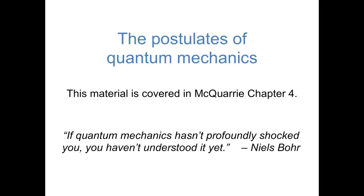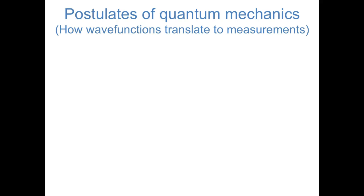Hi everybody. In this video we will continue to talk about how quantum mechanics works. In the previous video, we introduced the Schrödinger equation and we introduced the idea of wave functions. But we still didn't really get down to the rules of how quantum mechanics operates — if an object is in a certain wave function, what happens when you try to measure a certain property like position, momentum, or energy. In this video, we're going to talk about the postulates, the rules that govern quantum mechanics, and there are five of them.